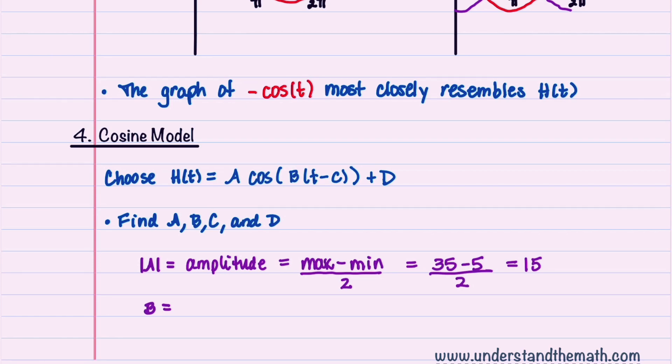Since our cosine function needs to be negative, we have to make sure to let A be negative 15 instead of positive 15.